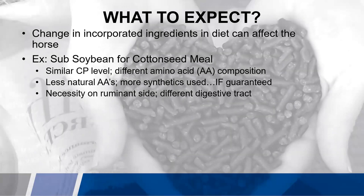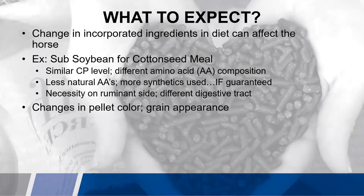This is not as big of a change for a least cost formula on the ruminant side because they have a different digestive tract. Cattle and all ruminants are able to utilize more of the nitrogen that is in the ingredients to then convert their own amino acids. Horses, with a different digestive tract, aren't capable of doing that — horses are going to rely more on what is in the diet to then have that desired effect.